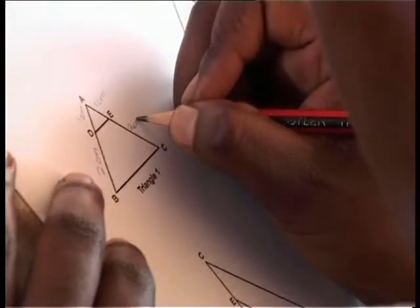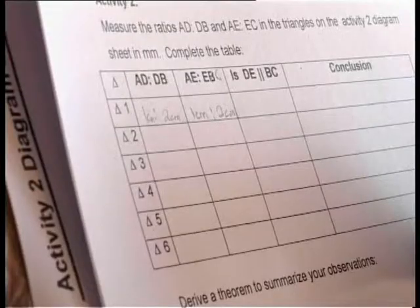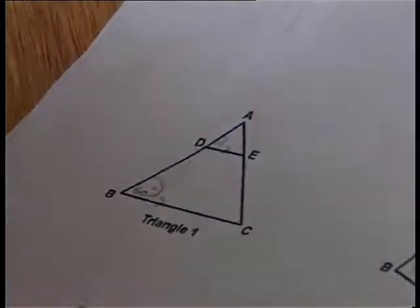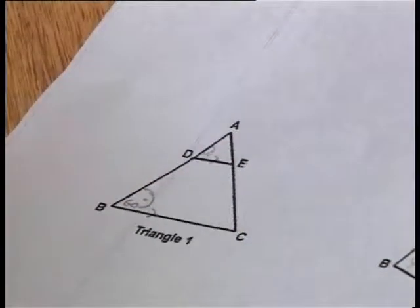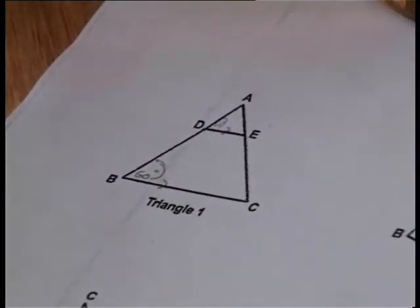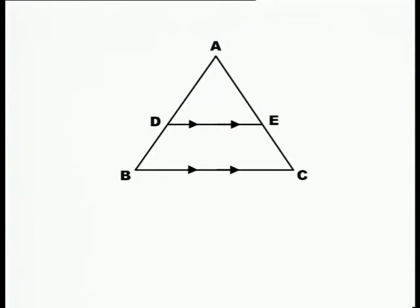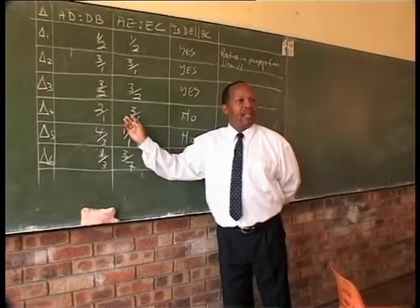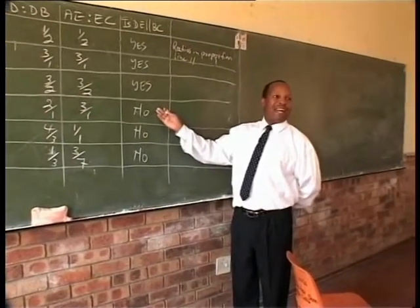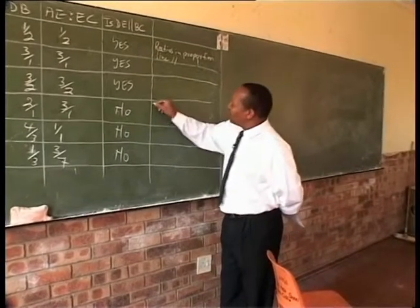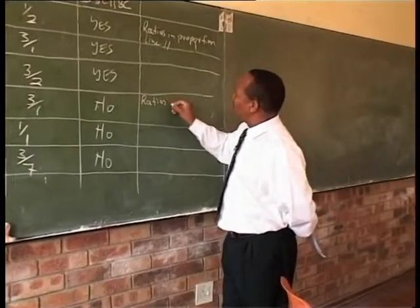One learner reports: the ratio for AD to DB is 1 to 2, and DE is parallel to BC because angle D and angle B both measured 60 degrees. For triangles 1, 2 and 3, learners see that the lines are parallel and the sides have the same ratio: AD divided by DB equals AE divided by EC. For triangles 4, 5 and 6, the lines are not parallel and the ratio is not the same.